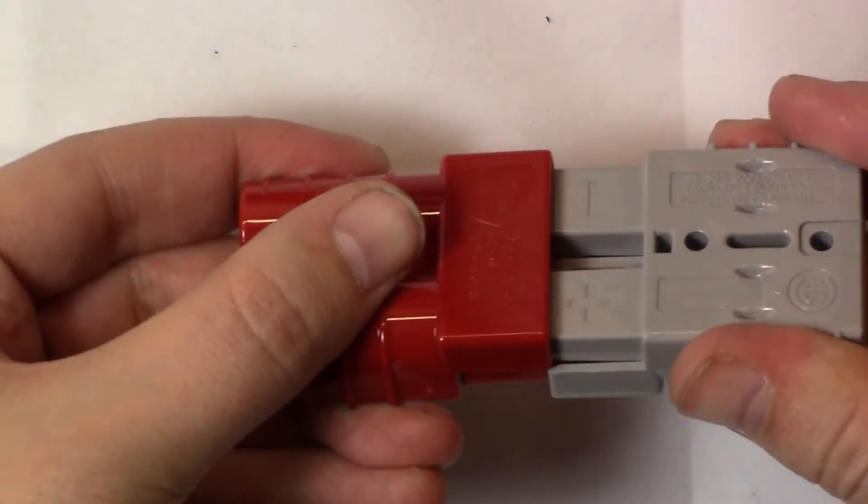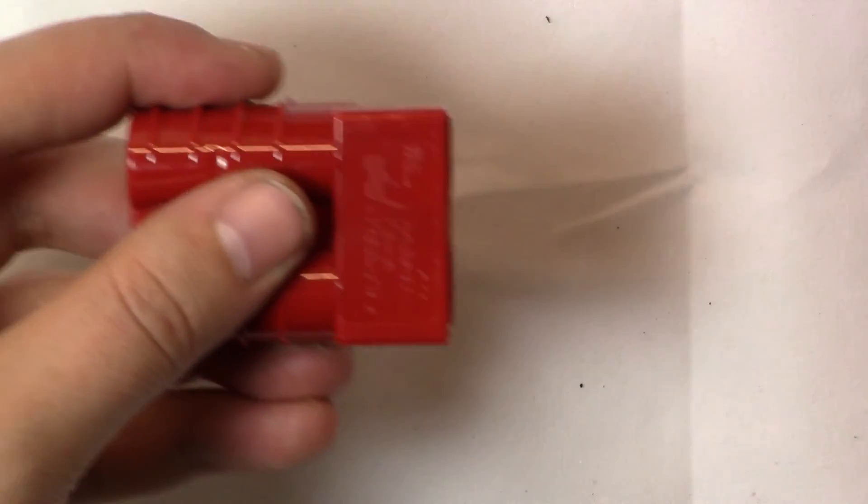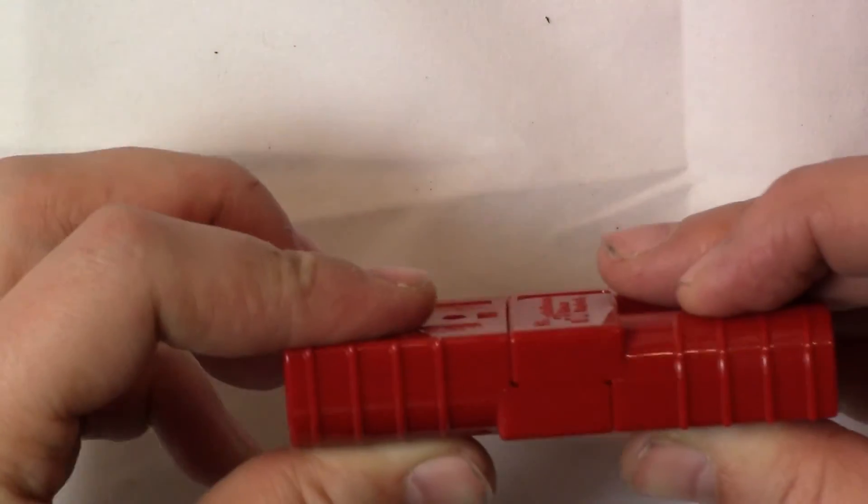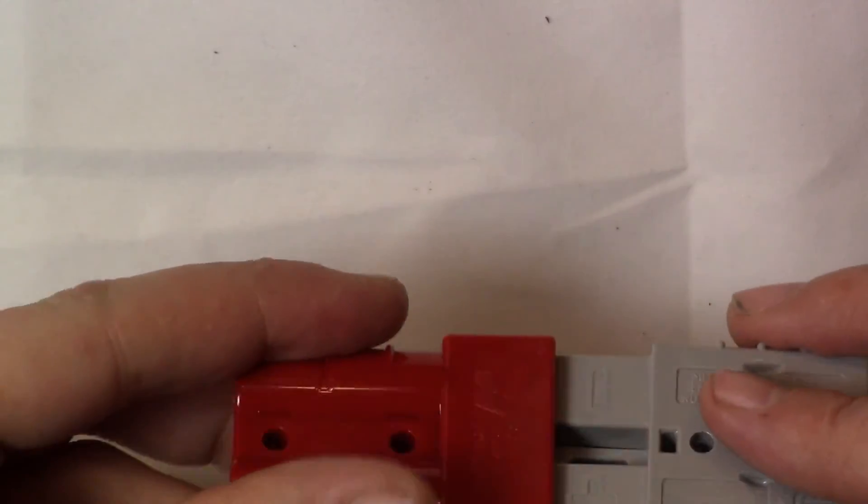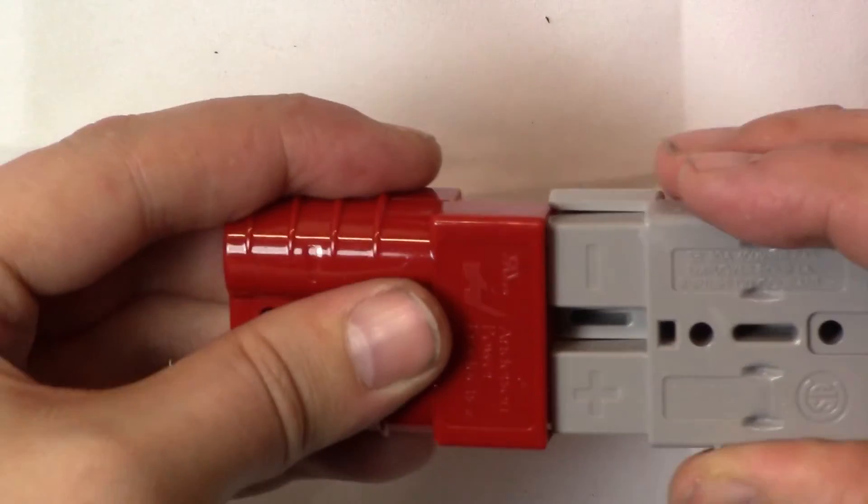Our SB connectors unlike our PowerPole connectors are keyed so can only be used with connectors of the same color. Red and red will go together just fine but red and grey will never be able to attach them together. Make sure you are very careful when purchasing these.